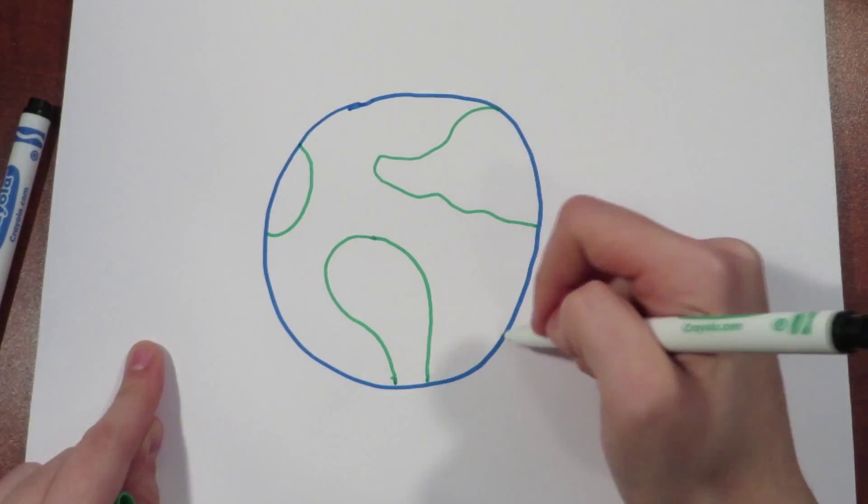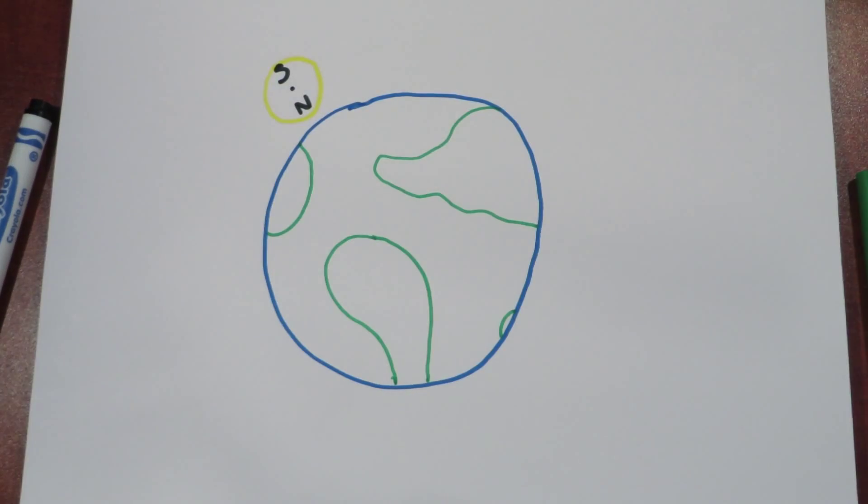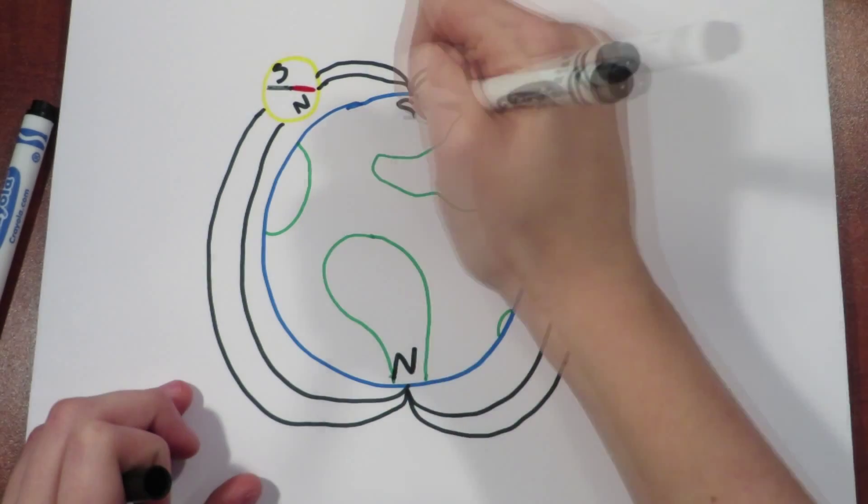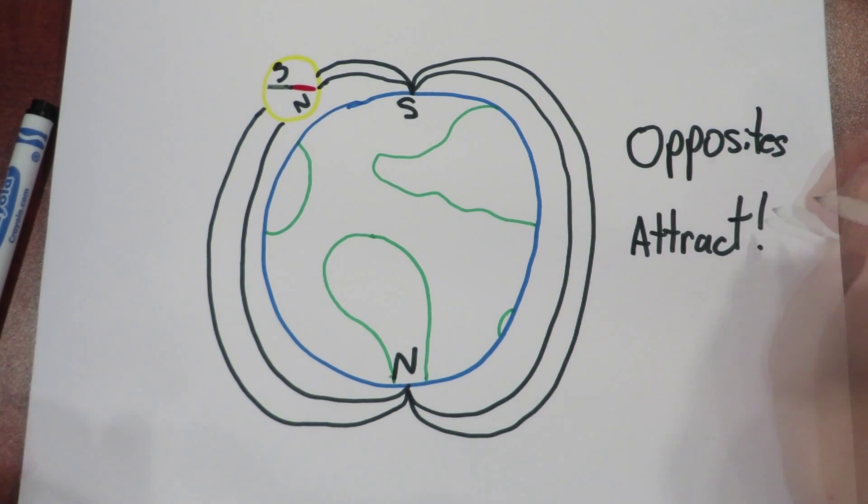The magnet within the compass is attracted to the southern magnetic field, which is located near the geological north. So what the compass is really pointing at is a south magnetic field, because of the principle of opposites attract.